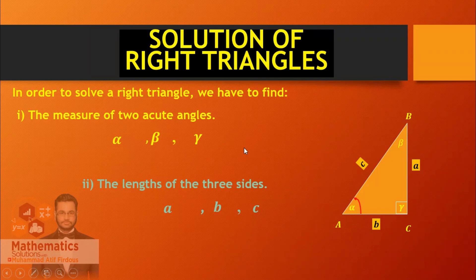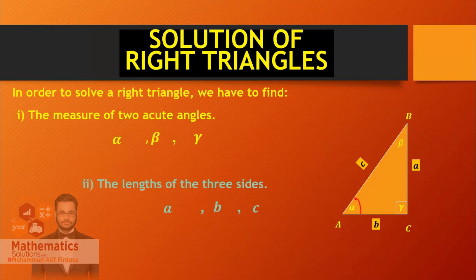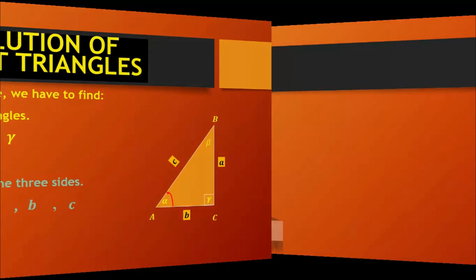In a triangle, you will be given either an angle or a side, and you will find the rest of the three. There are six elements in total. If we look at this exercise, there is no problem. So let's start.